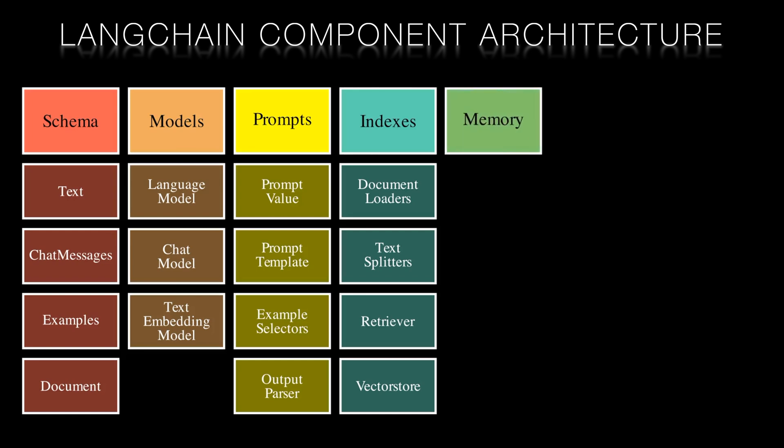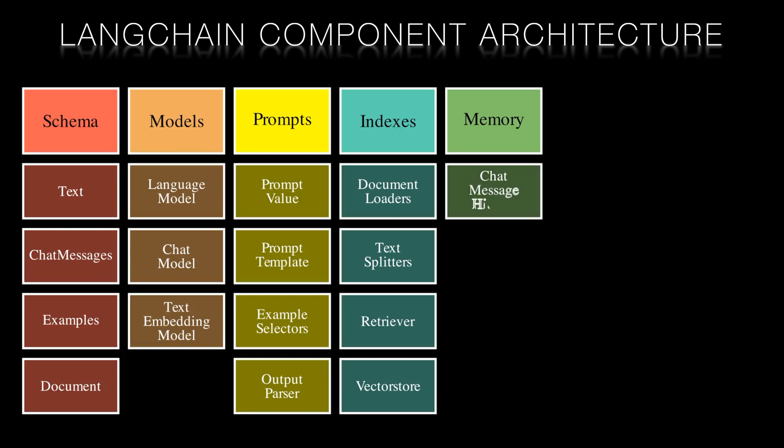Memory in Langchain is primarily managed through the chat message history. This component stores past interactions and can pass these interactions to the model to provide context to the conversation. It plays a key role in creating a cohesive and contextually aware conversational AI.